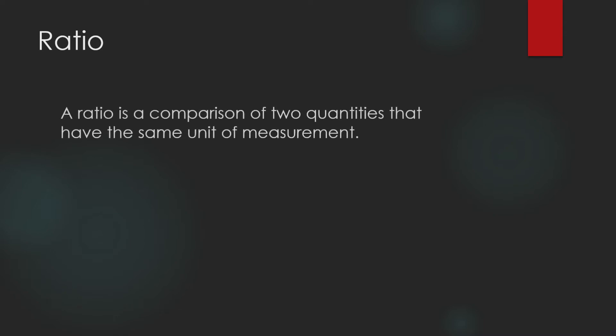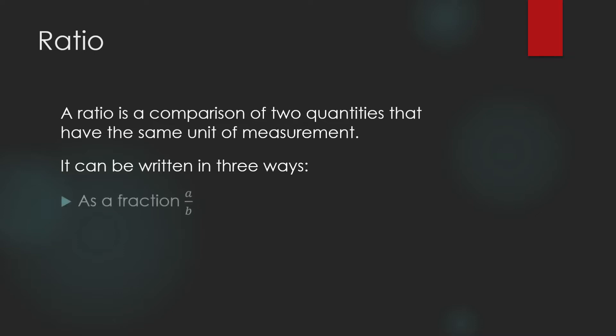A ratio is a comparison of two quantities that have the same unit of measurement. It can be written in three ways. For example, if we have two quantities A and B, we can write it as a fraction — the ratio is A over B.